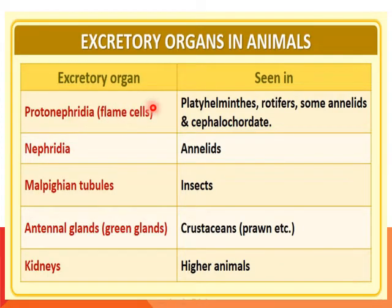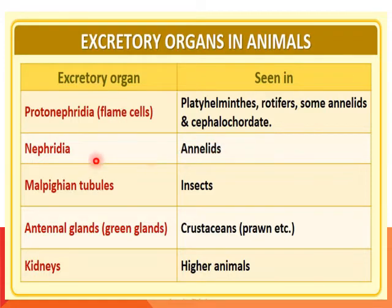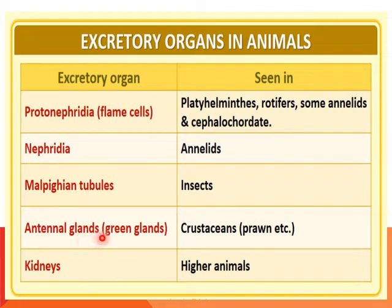We have different excretory organs from lower to higher animals. In Platyhelminthes, for example liver fluke, the excretory organ is protonephridia or flame cells. In annelids like the earthworm, it is nephridia. In insects, it is Malpighian tubules. In crustaceans like prawns, which are aquatic, the excretory organ is the antennal gland or green gland. In higher animals like reptiles, birds, mammals, and humans, the excretory organ is the kidney.